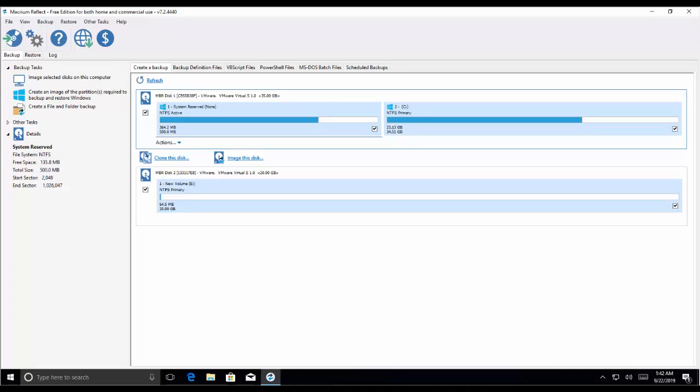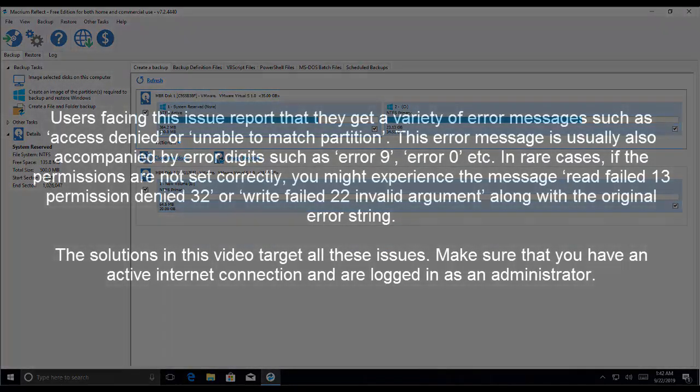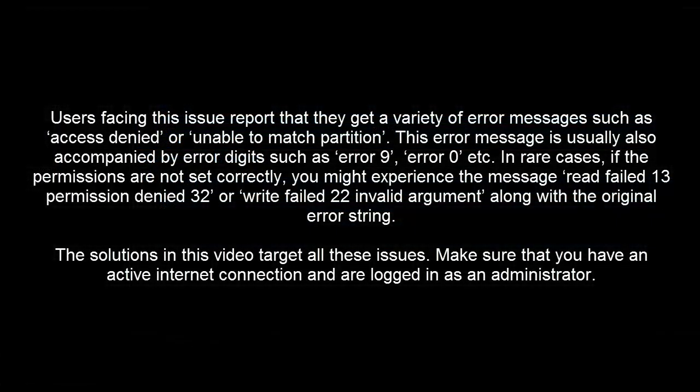Users facing this issue report that they get a variety of error messages such as 'access denied' or 'unable to match partitions.' The error message is usually also accompanied by an error code such as Error 9 or Error 0. In rare cases, if the permissions are not set correctly, you might experience messages like 'read failed 13 permission denied 32' or 'write failed 22 invalid argument.' The solutions we are going to show you now target all these issues. Make sure that you have an active internet connection and are logged in as an administrator.